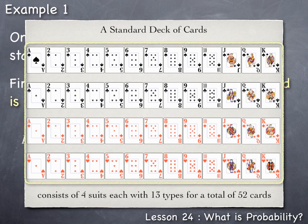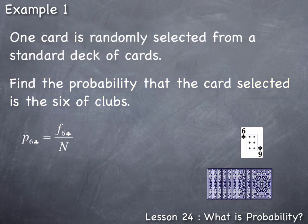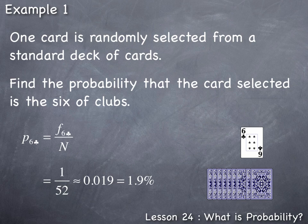We know there are 52 cards in a standard deck. To find the probability that the randomly selected card is a six of clubs, we just need to count the number of six of clubs in the deck, which is just one. So the probability is one out of 52, or 0.019 as a decimal, or 1.9%.